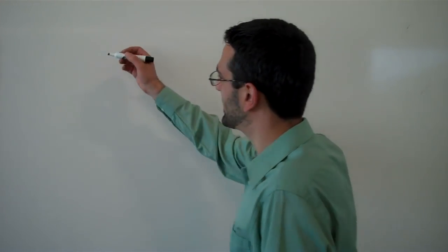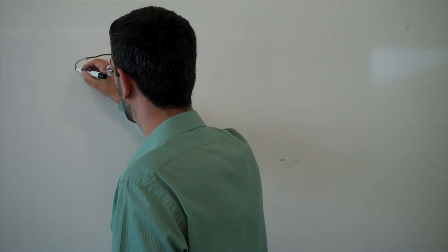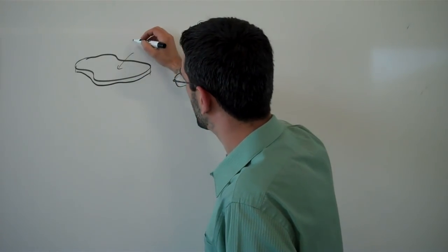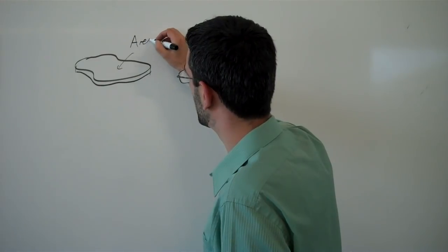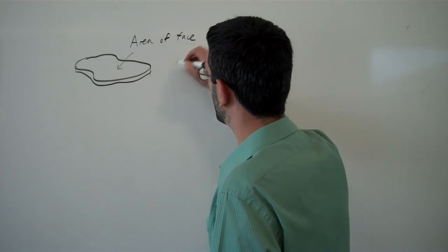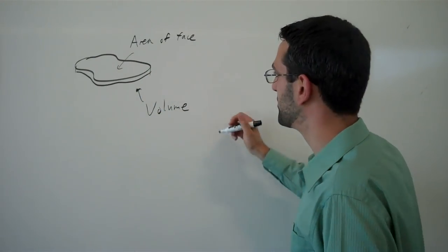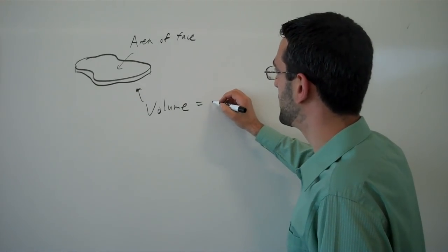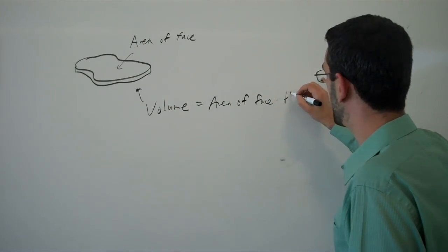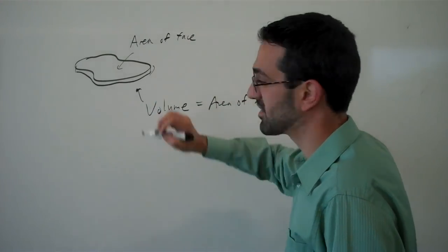So one of the keys to this is the idea that if you have some strange shape with a tiny amount of thickness to it, and if you know the area of the face, then the volume of this little slab of stuff will be the area of the face times the thickness of the slice, right, this little amount there.